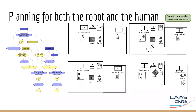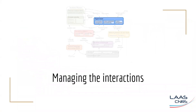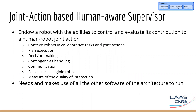A plan has no point if it's not executed, so let's talk about the supervision. We want to endow the robot with the ability to control and evaluate its contribution to human-robot joint action. The supervision system is based on all the other components to get a plan and then execute it. But it's not only about following the different steps of the plan — it has to be aware and analyze everything happening in the environment to make the right decision at the right time. For example, if it has to give a cube to a human, which is in the plan, but the human is not there, the robot has to decide not to give the cube yet and wait for the human to come back.